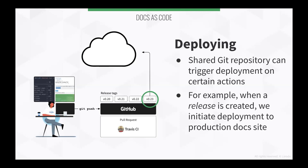You could instead trigger a deploy whenever you merge into the master branch, which is the main branch in Git. Git has this concept of branches — parallel lines of work. You usually have a main one as the source of truth, and other branches people temporarily work in. At Linode, we create these releases, and that triggers the deployment mechanism. There are all sorts of different triggers you can customize to however you want.